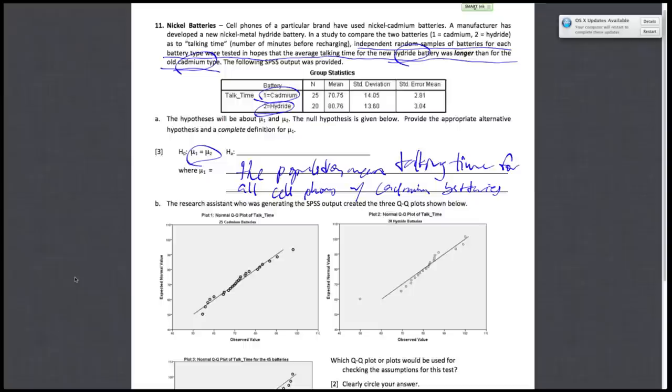So remember that hydride battery, that refers to 2, and the cadmium type is just 1. So these researchers are hypothesizing that the talking time for the new hydride battery, which would be mu2, is longer than that for the old cadmium type, which is denoted by mu1. So if they are theorizing that mu2 is bigger than mu1, that would just be our alternative hypothesis. So you would just write mu1 is smaller than mu2. So that's part A.